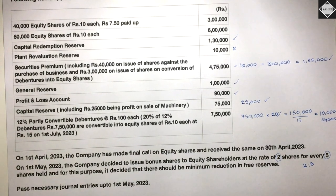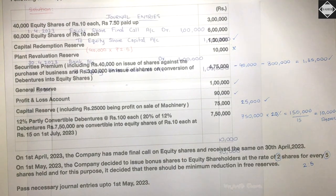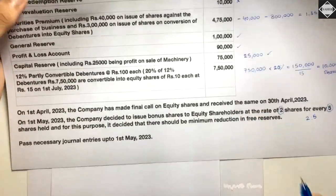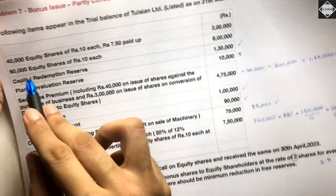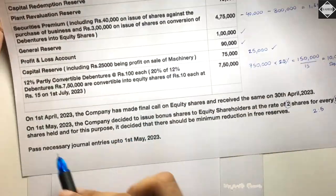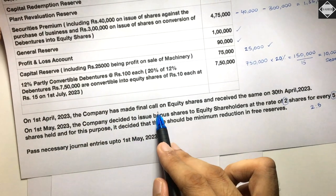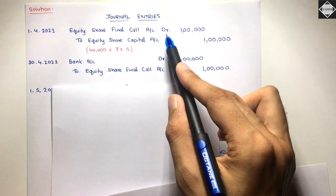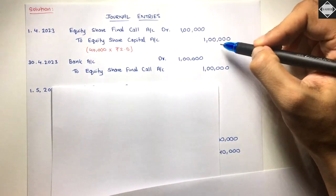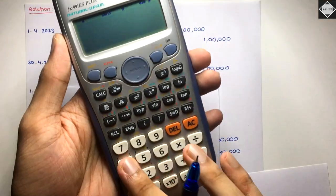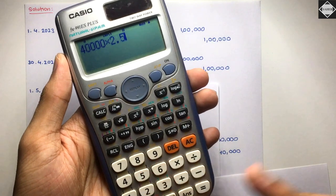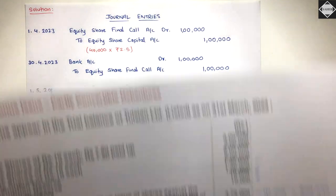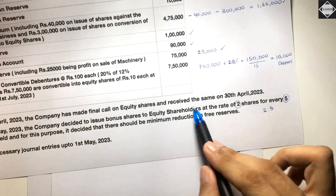Pass necessary journal entries up to 1st May 2023 only — no entry for debenture conversion as that happens on 1st July. Let's begin with the final call entry. 1st April 2023: Equity Share Final Call Account Dr. to Equity Share Capital — Rs.1 lakh. How? 40,000 shares × Rs.2.5 (pending amount) = Rs.1 lakh. Then 30th April 2023: Bank Account Dr. to Equity Share Final Call Account — Rs.1 lakh (money received).